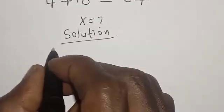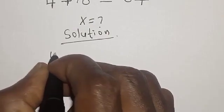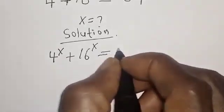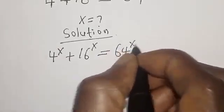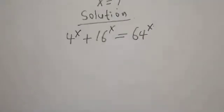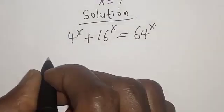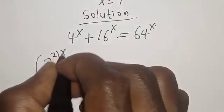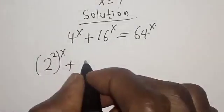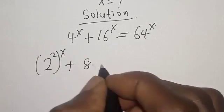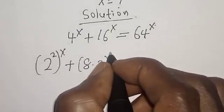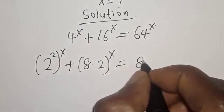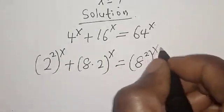Solution. The equation given is 4 raised to power s plus 16 raised to power s is equal to 64 raised to power s. Now, 4 raised to power s is 2 squared raised to power s, plus 16 is 8 multiplied by 2, raised to power s, is equal to 64, which is 8 squared, raised to power s.